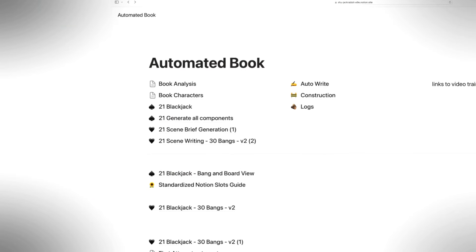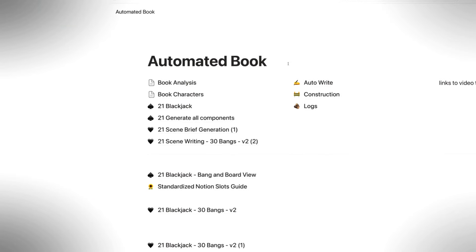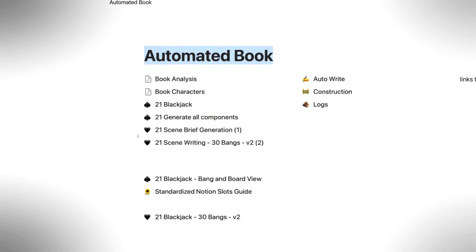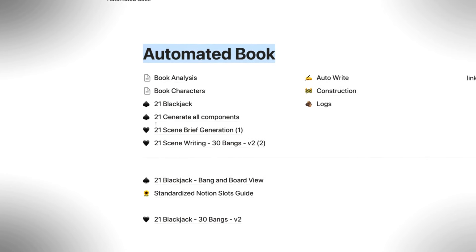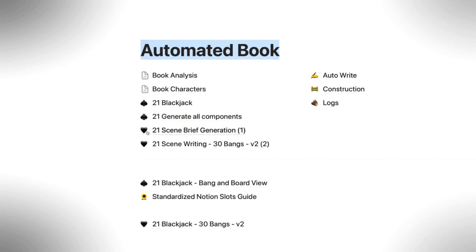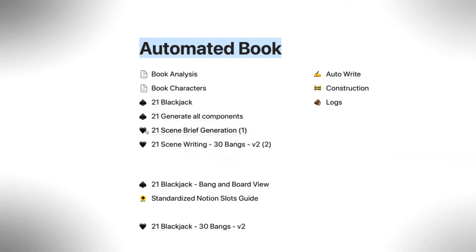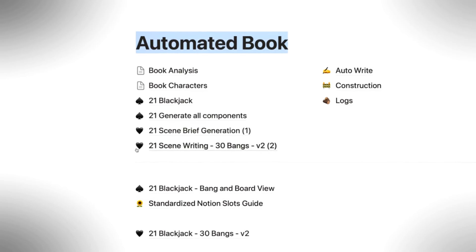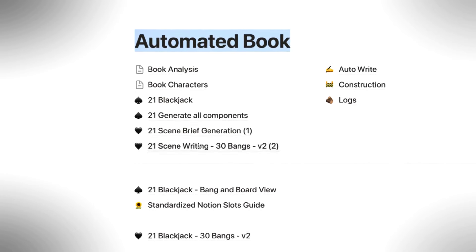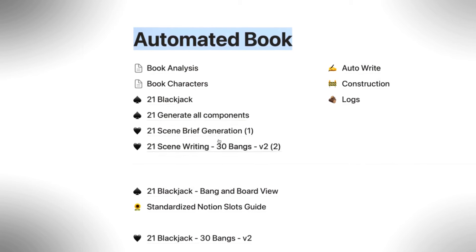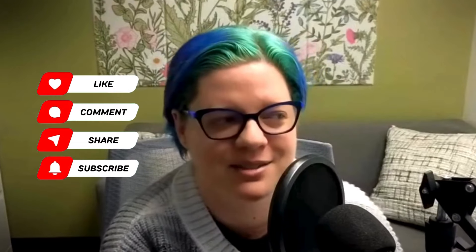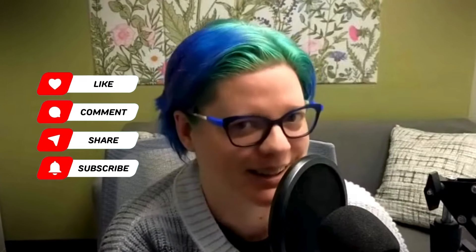In my first attempt at this, I realized I needed three separate Blackjacks: Generate All Components is the first one, Generate Scene Brief is number two, and three is the Scene Writing Blackjack. Now I am going to combine all three into one because we have Notion page resets — that's what we're going to do tonight.